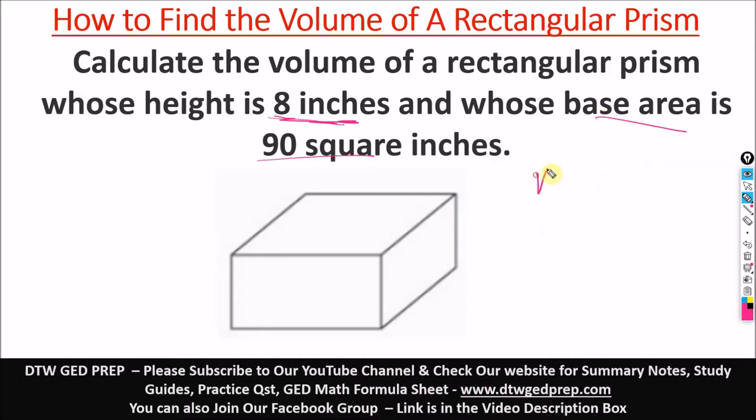To find the volume of a rectangular prism, the formula is L×W×H, length times width times height. You can see from this question here, there's no length and width, but there's a base area. I'm going to explain this now with this diagram.